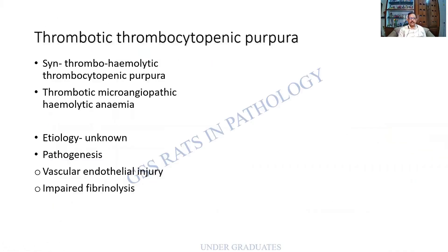The first disorder is thrombotic thrombocytopenic purpura, or TTP. A synonym is thrombohemolytic thrombocytopenic purpura, indicating an element of hemolysis. Another term is thrombotic microangiopathic hemolytic anemia. These are all synonyms. Please do not mistake thrombotic thrombocytopenic purpura for ITP — that would be totally wrong.